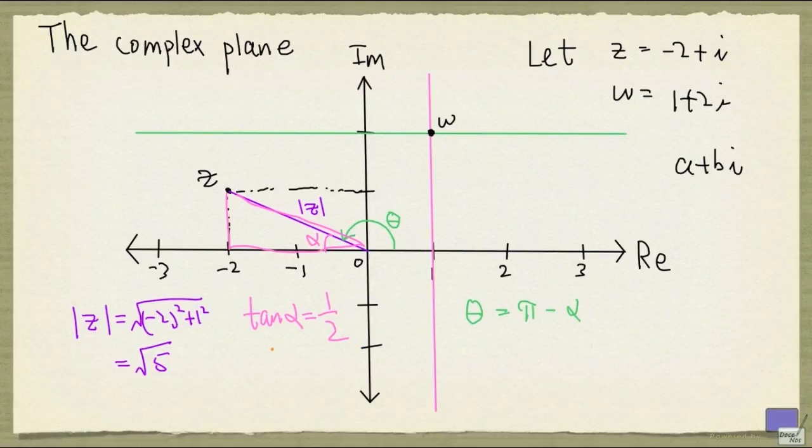So if you take out your calculator and compute the arc tangent of 1 half, you'll get roughly 0.4636476. And so theta would be roughly 2.6779.